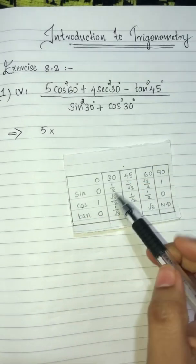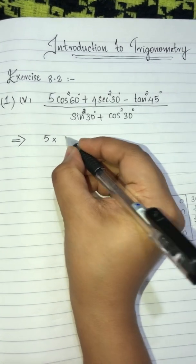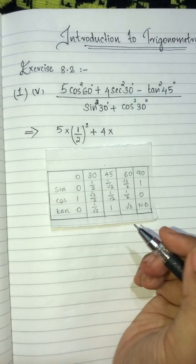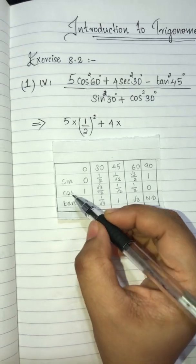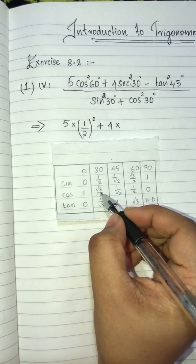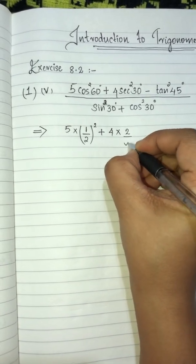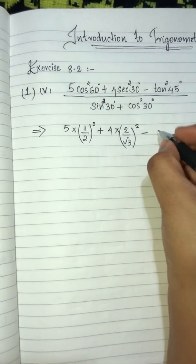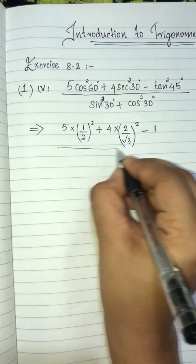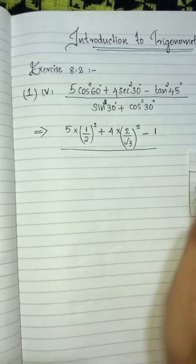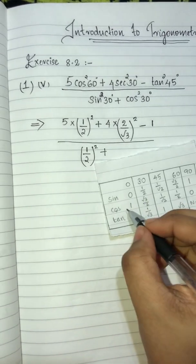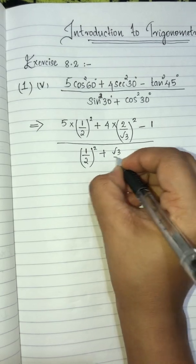5 into cos²60: cos 60 is 1/2, so 5 into (1/2)², plus 4 into sec²30. sec 30 is the reciprocal of cos 30, and cos 30 is √3/2.